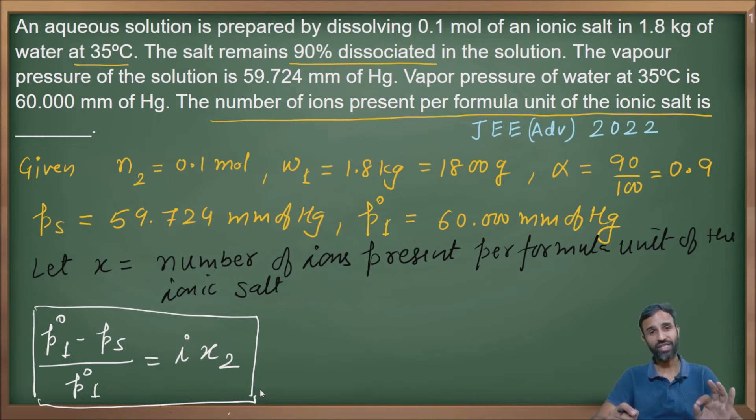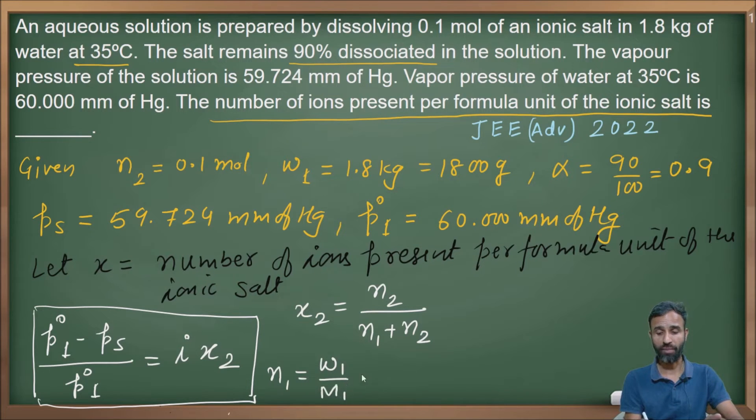X₂ is the number of moles of solute divided by total moles. n₂ is given to you as 0.1, and n₁ = w₁/M₁ = 1800/18 = 100 moles.